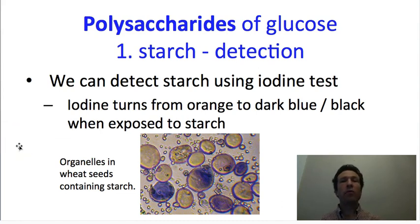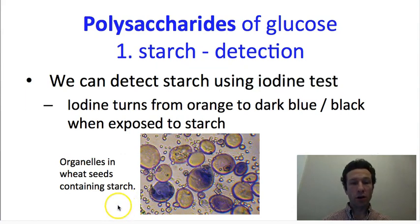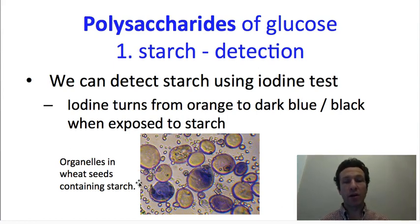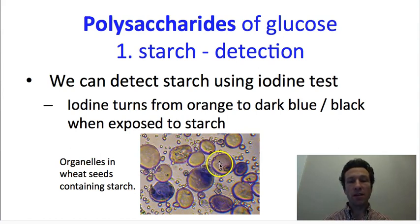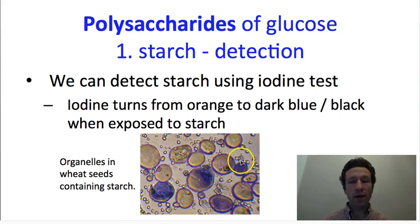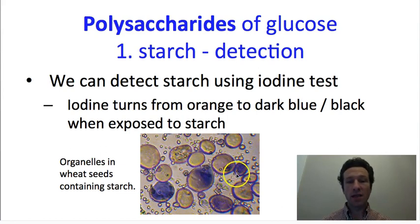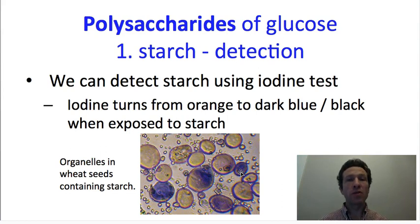In the upcoming laboratory, we are going to detect starch using the iodine test. Iodine is an orangish color, but when exposed to starch it turns to a deep purplish, blue, or even black color if there's enough starch present. Here you can see vesicles from a ground-up wheat seed — where iodine has gone across the membranes inside these structures, we get this dark purplish color, telling us there is starch present. We'll do this with potatoes, and you'll also choose other plants to look for evidence of starch storage.